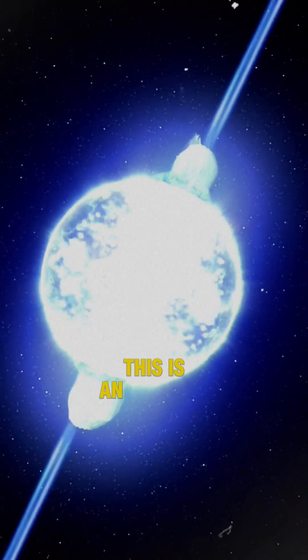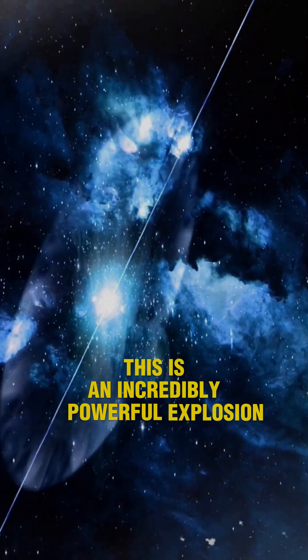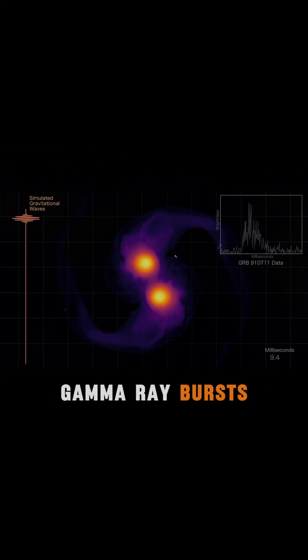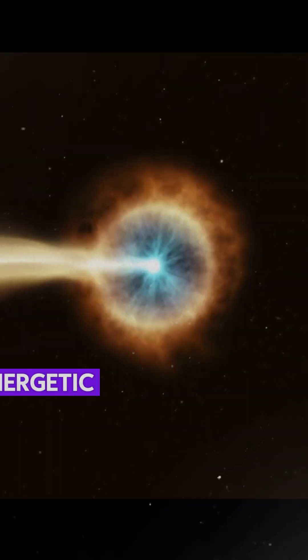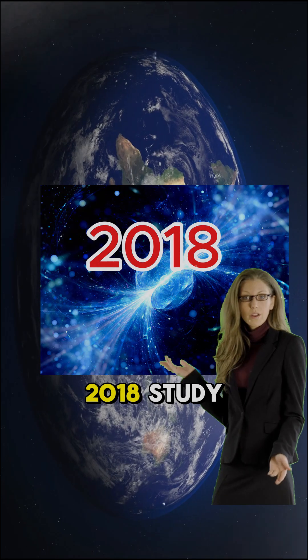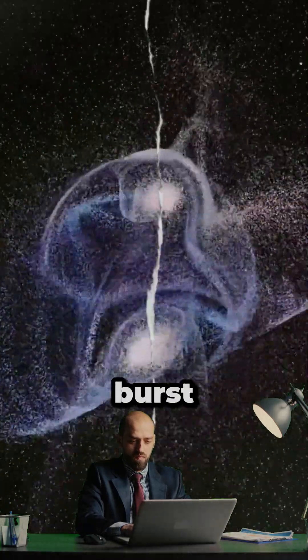This is an incredibly powerful explosion capable of wiping out entire planets. Gamma-ray bursts are considered one of the most energetic releases of energy in the universe. According to a 2018 study, a gamma-ray burst occurs in the Milky Way approximately once every five million years.